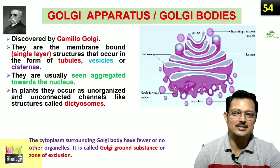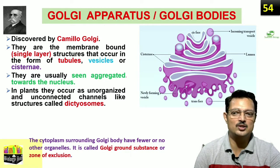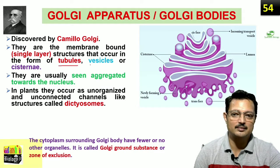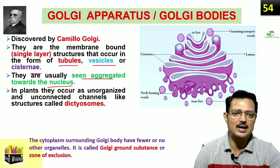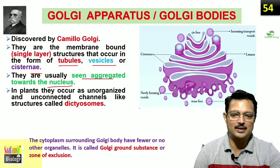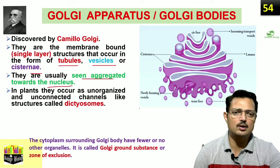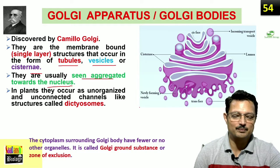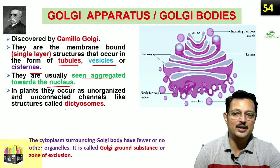The Italian scientist Camillo Golgi discovered some discrete organelles inside a cell and called them Golgi apparatus or Golgi bodies. They are also membrane-bound with a single membrane, and they occur as tubules, vesicles, or cisternae. They are seen segregated towards the nucleus, and wherever Golgi apparatus are present, the area beside them will be clearer with fewer or no cell organelles — this area is called the zone of exclusion. In the case of plants, they are very unorganized and unconnected and are called dictyosomes.